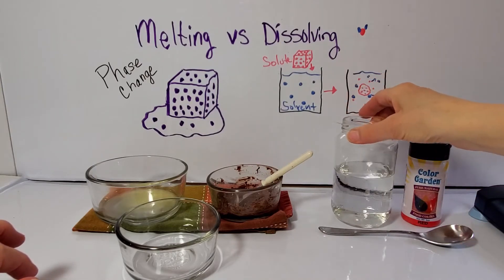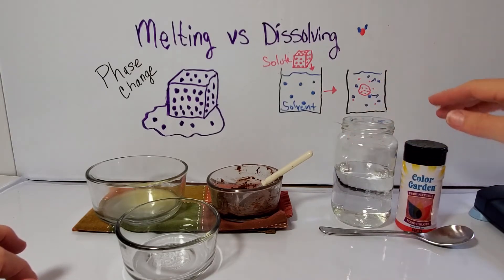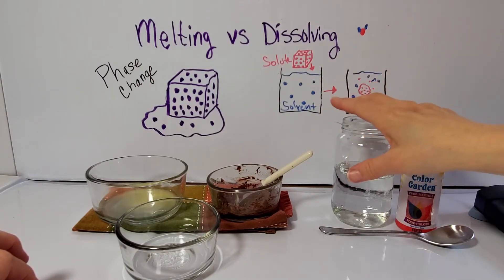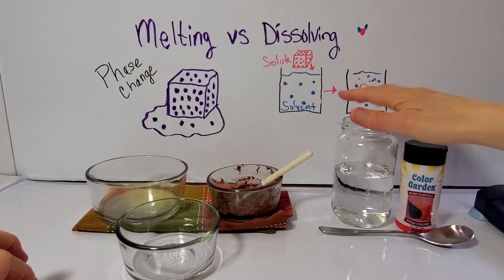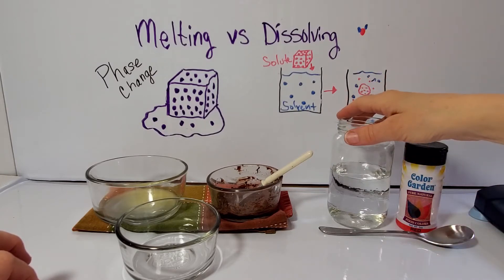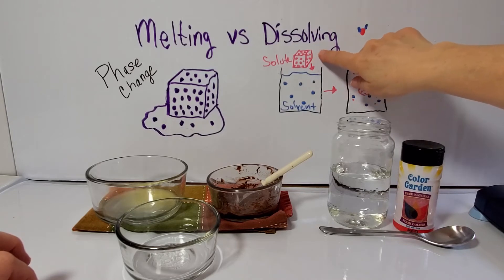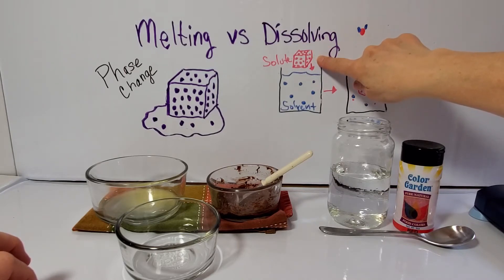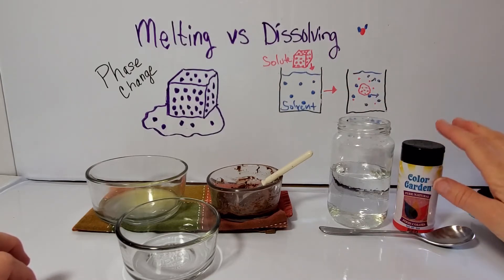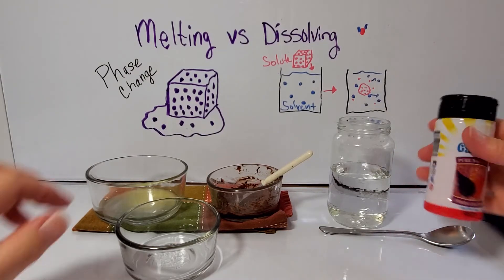Let's compare this to dissolving. I have some colored sugar and just a jar of water. The water is my solvent in liquid form — particles a little further apart, still staying in the container, fixed volume but not a fixed shape. And this represents one of my sugar crystals, which is in solid form. So a solid solute is going into a liquid. I'm not adding any heat. I'm not adding any energy. So what is going to happen?